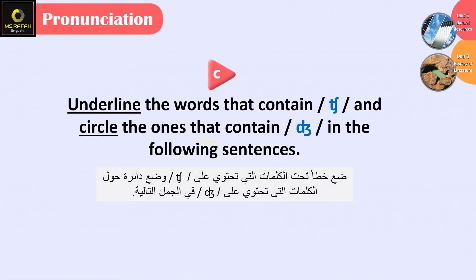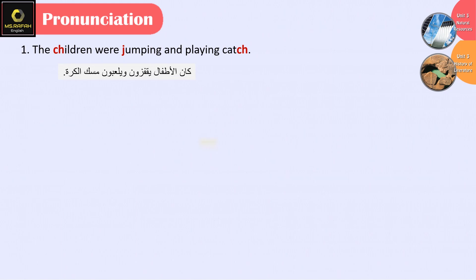Question C: Underline the words that contain Ch and circle the ones that contain J in the following sentences. Sentence 1: The children were jumping and playing catch. We have the words Ch: children; J: jumping, catch.